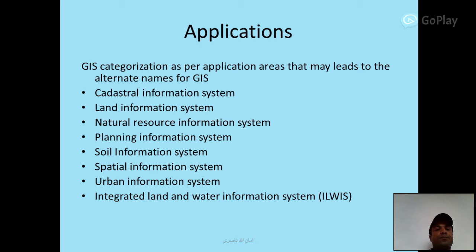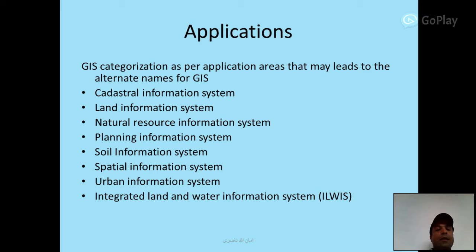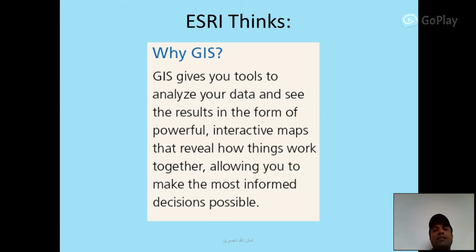GIS Applications: categorization by application areas leads to alternate names for GIS, including terrestrial information system, land information system, natural resource information system, planning information system, soil information system, spatial information system, urban information system, and integrated land and water information system. Why GIS? GIS gives you tools to analyze your data and see results in the form of powerful interactive maps that reveal how things work together, allowing you to make the most informed decisions possible.